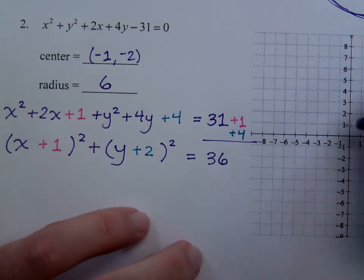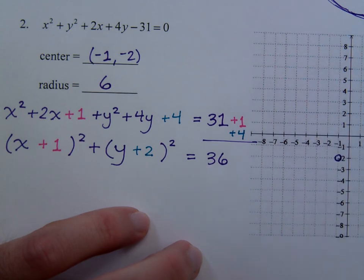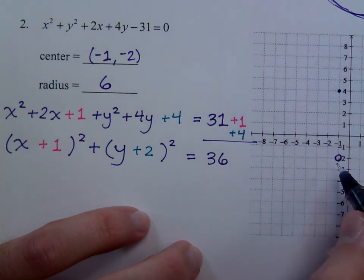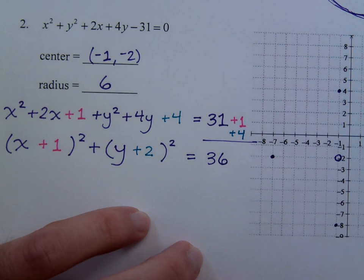So we have negative 1, negative 2, and a radius of 6. So it goes 6 in the 4 major directions. So 6 this way, here, down, to the right.